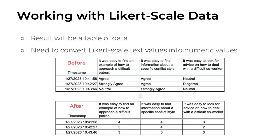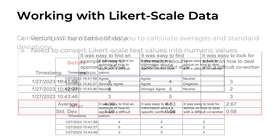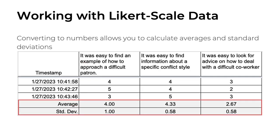Once you've converted your text-based values into numbers, you can start to calculate useful statistics, such as averages and standard deviations. This can be done for each Likert scale item. So in the first example in this table, it was easy to find an example of how to approach a difficult patron. The individual responses were four, five, and three — in other words, agree, strongly agree, and neutral. Because we have these numeric values, we can calculate the average, which turns out to be 4.0 with a standard deviation of one.